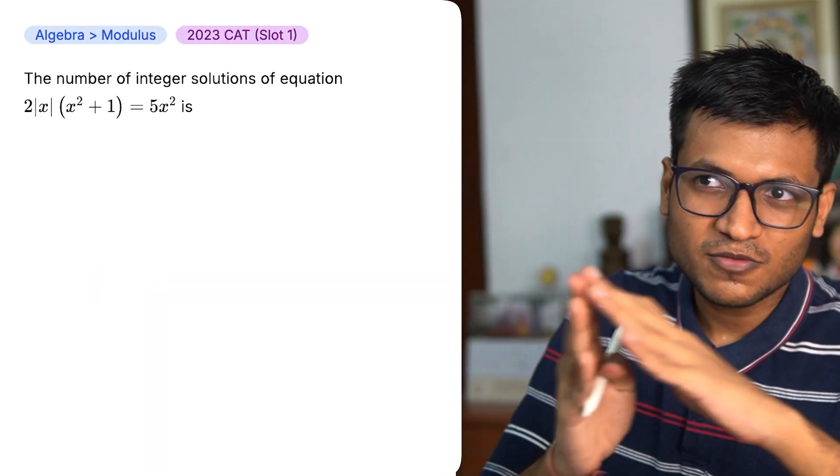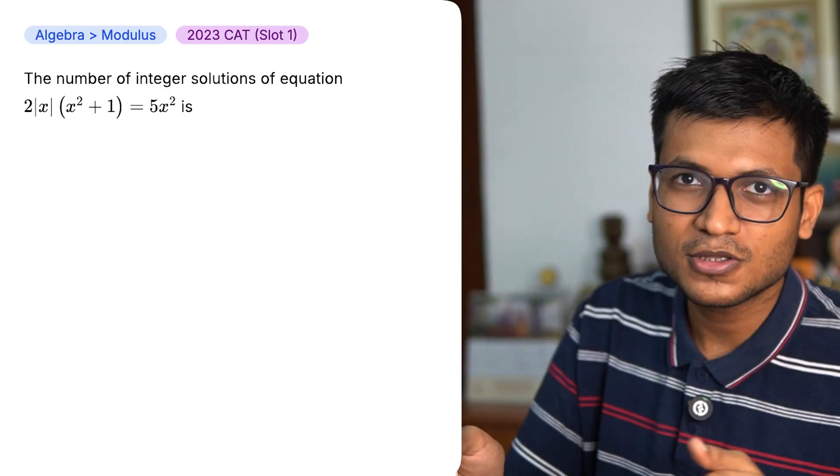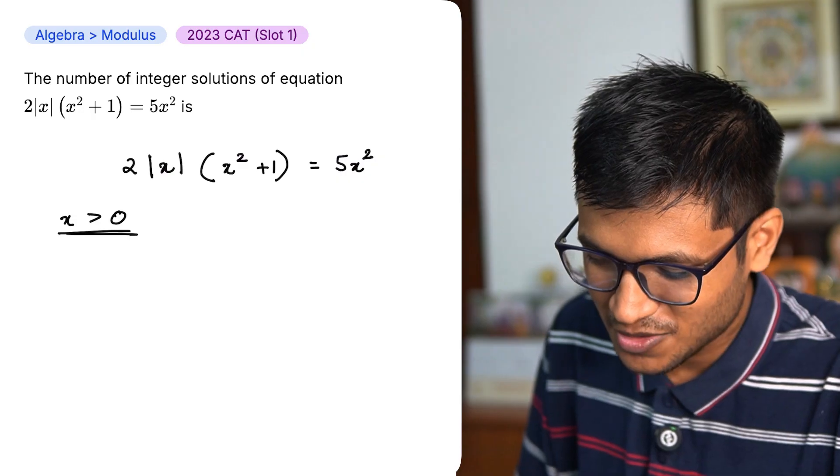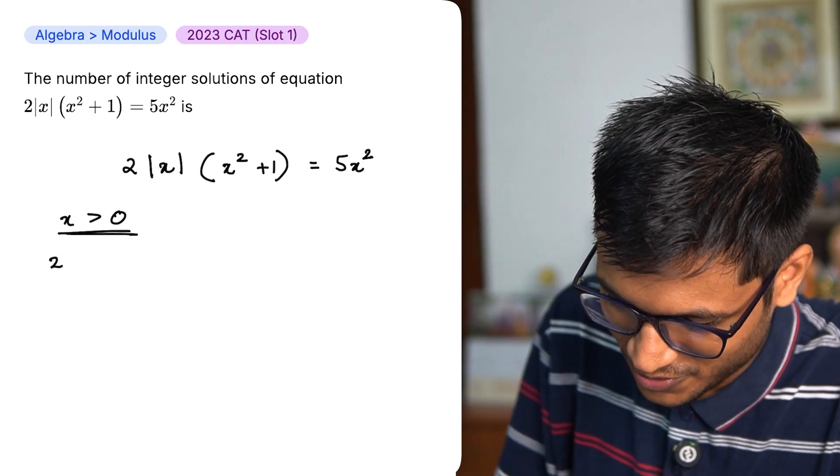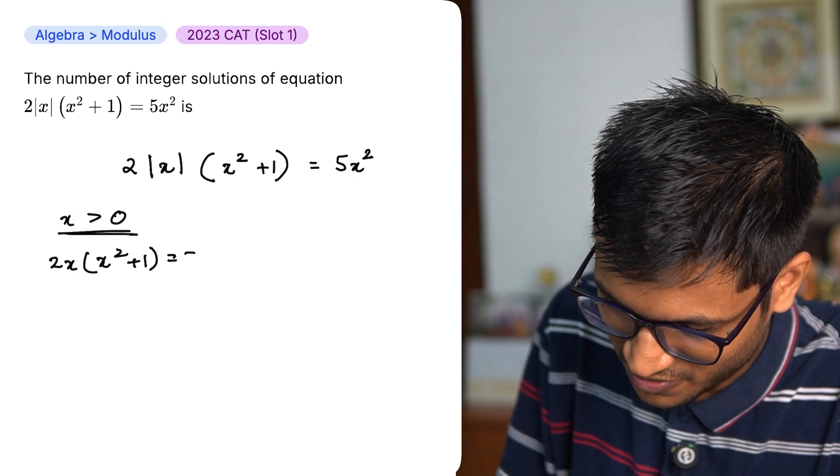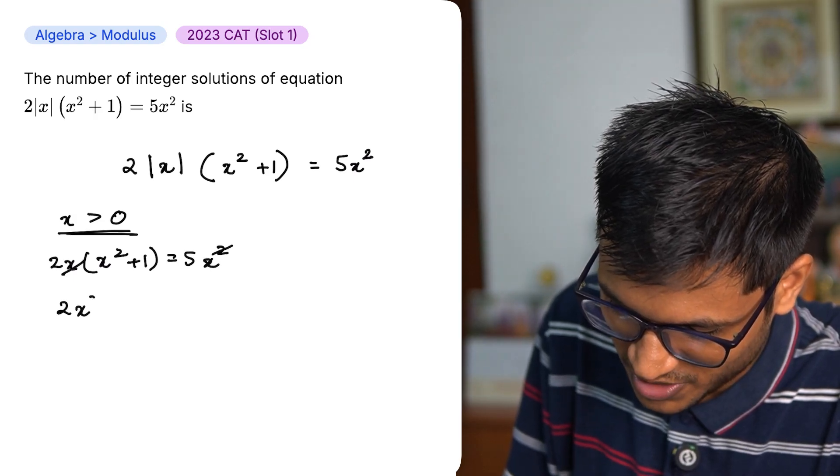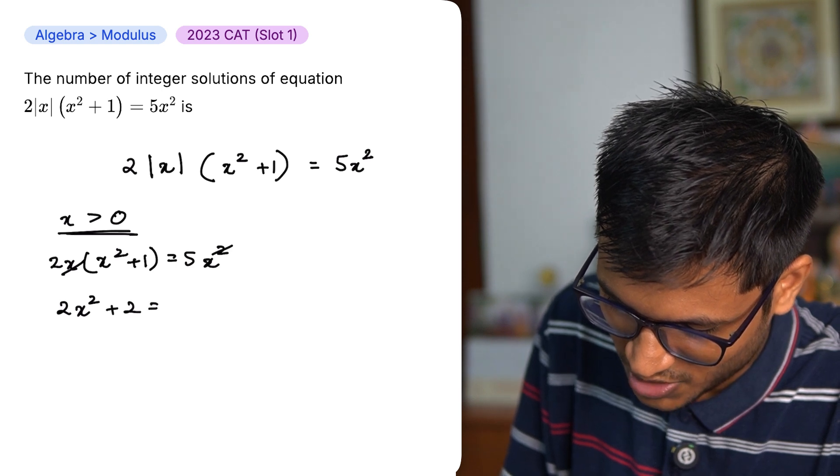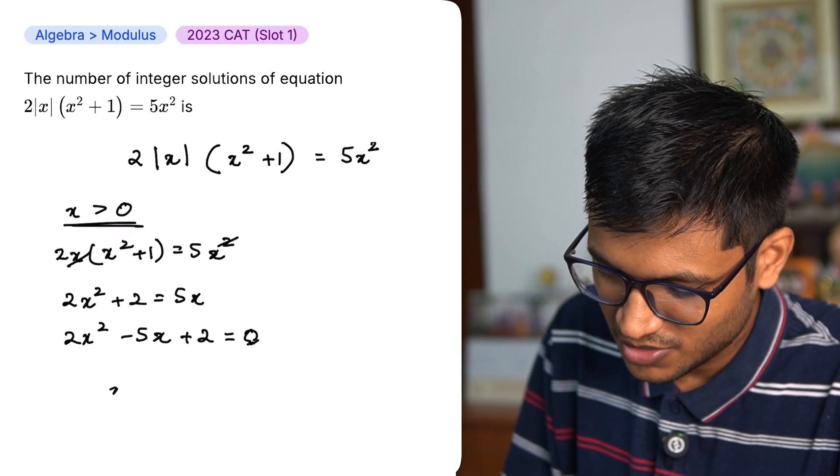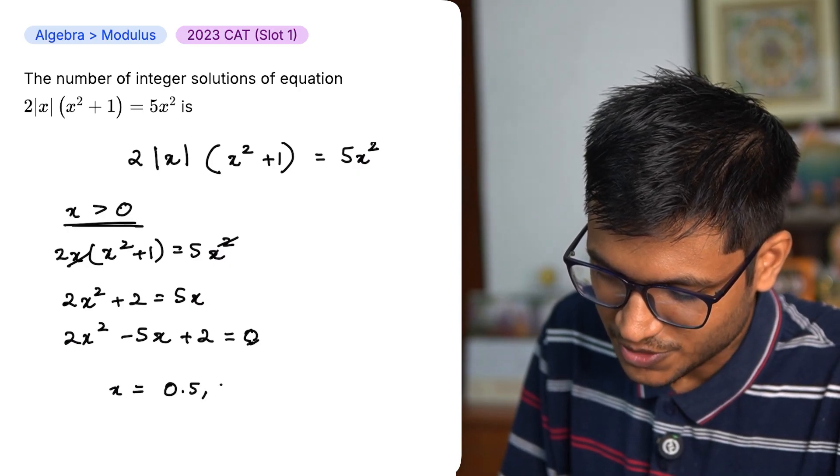If you see a modulus question, open it once in positive. Open it once in negative and then solve it. Okay, open it once in negative and answer will get I promise. Now let us do x greater than 0. So I get 2x (x² + 1) equals 5x². I can cancel this x and one of these x. So 2x² + 2 equal to 5x. So this is a quadratic equation and when you solve it, you will get x equal to 0.5 and x equal to 2.